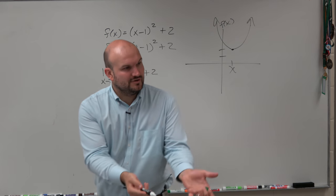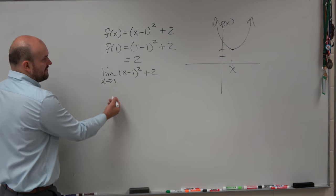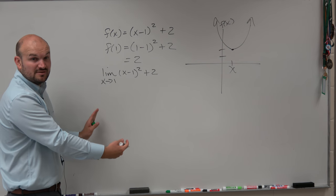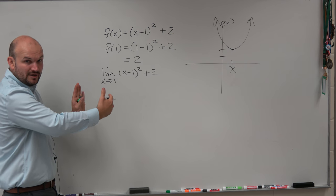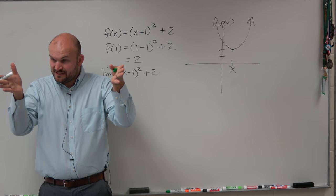So we already did that. You guys did your table. We created a table of values from the left and we created a table of values from the right. And we kept on getting closer and closer to 1. We approached it from the left and from the right.